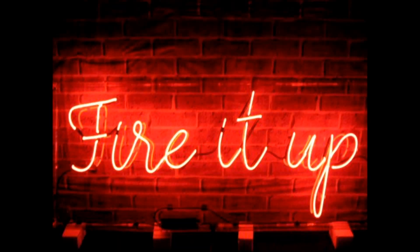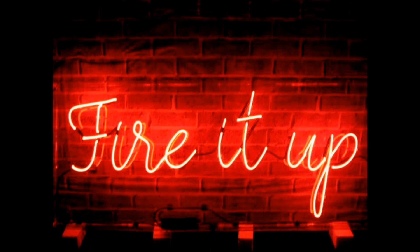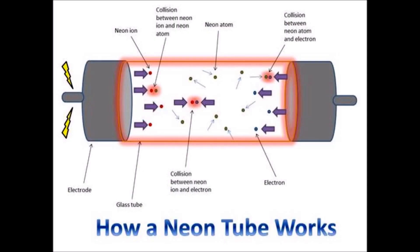To produce their distinctive light, they exploit what is called electric discharge through gases. Ordinarily, gases do not easily conduct electricity — they are good insulators. They can, however, be made to conduct electricity if their pressure is lowered and a high voltage is applied.